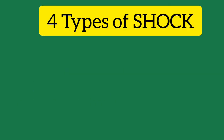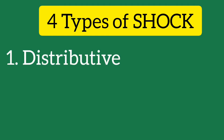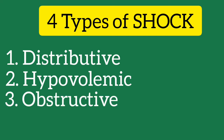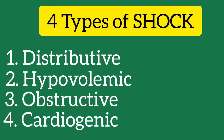There are four broad categories of shock: distributive, hypovolemic, obstructive, and cardiogenic. The wide range of etiologies can contribute to each of these categories and are manifested by the final outcome of shock.